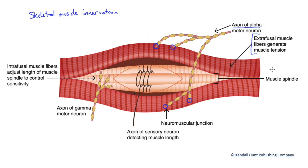Now, there are also another much smaller number of muscle fibers known as intrafusal fibers. Those are shown in the lighter color here, and these intrafusal fibers are part of a sensory structure called the muscle spindle. It is involved in what is termed proprioception — the sensing of position or movement in space.